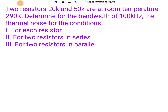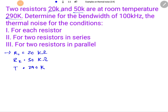Moving on to the next question: two resistors, R1 = 20 KΩ and R2 = 50 KΩ, are at room temperature of 290 Kelvin. For a bandwidth of 100 KHz, determine the thermal noise for each resistor individually, for the two resistors in series, and for the resistors in parallel.